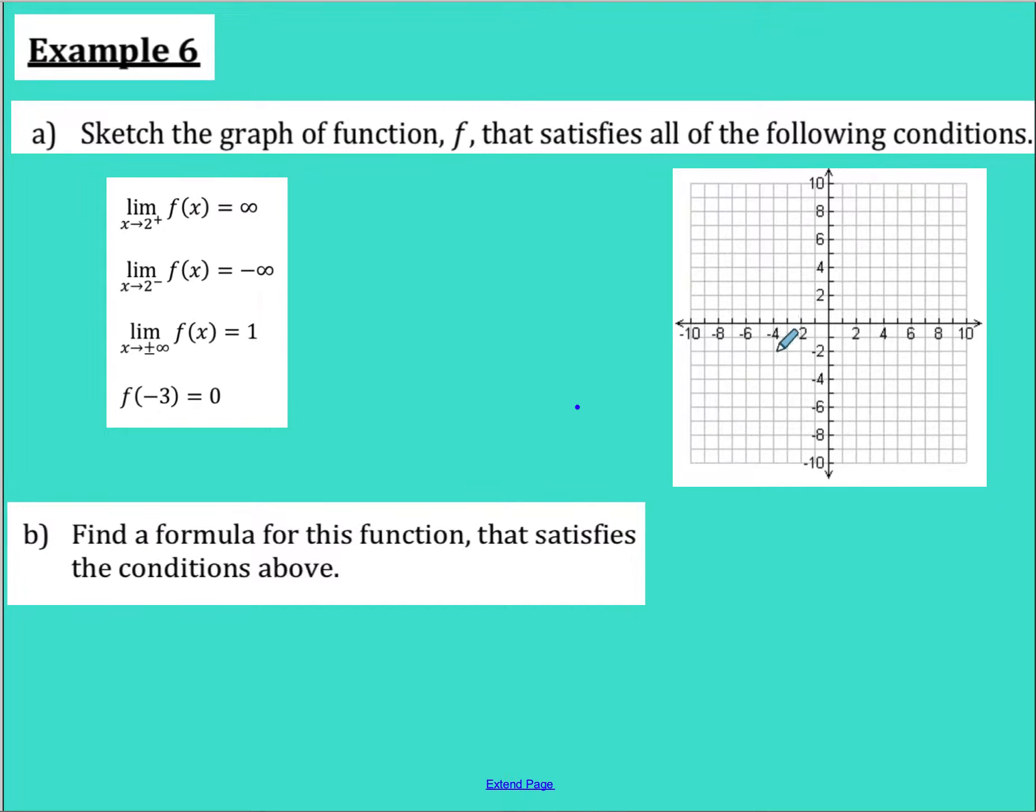So this is a vertical asymptote. If I were to draw it, as I get close to two from the right, we're going to infinity. So here's my line of two, I'm going to put my asymptote on there. We got x equals two, and as we approach it from the right, we're going to infinity. So we got that going up. Then as you approach two from the left, we're going to negative infinity, so I'm going to make a little note that we got to be going down as we get close to that.